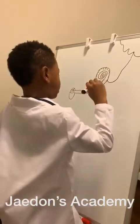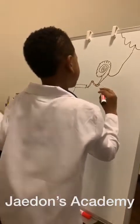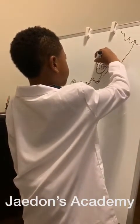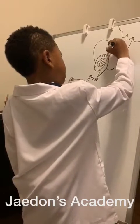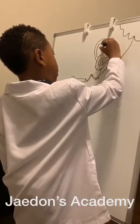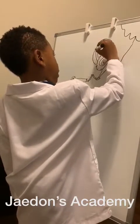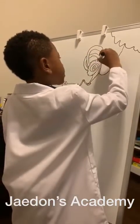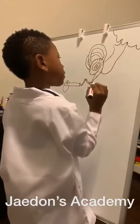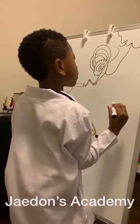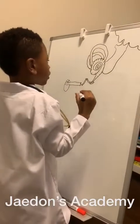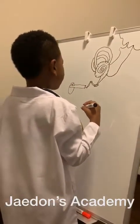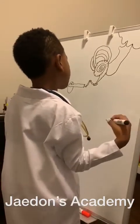The ear doesn't just control hearing, but also controls your balance. Haven't you heard of semicircular tubes? They're tubes and they have fluid in them. When that fluid moves, it tells the brain that you are moving, and that's how you know that you are moving around. But that's also what's responsible for making you dizzy.